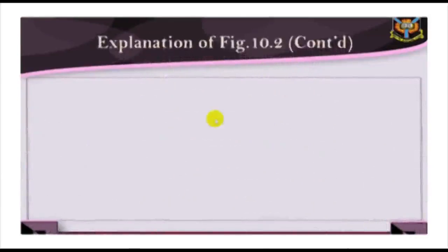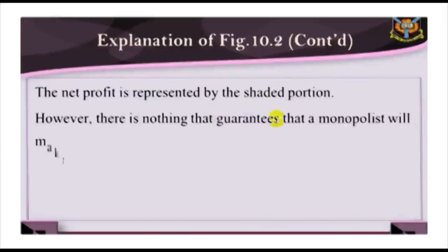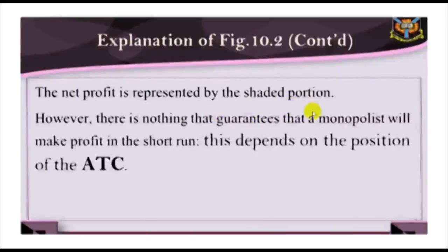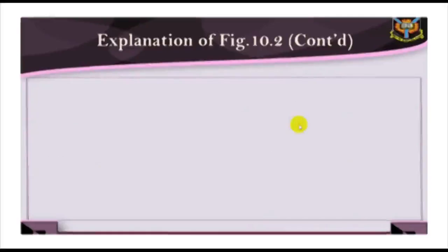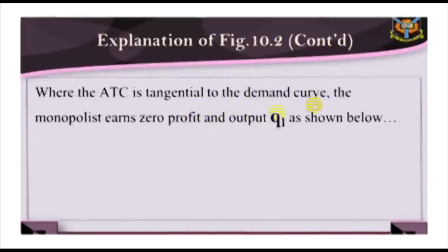The net profit is represented by the shaded portion. However, there is nothing that guarantees that the monopolist will make profit in the short run. Whether it makes profit or not depends on the position of the average total cost. Where the average total cost is tangential to the demand curve, the monopolist earns zero profit at output Q1.